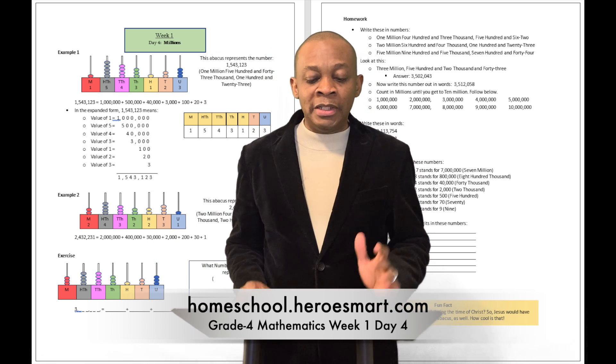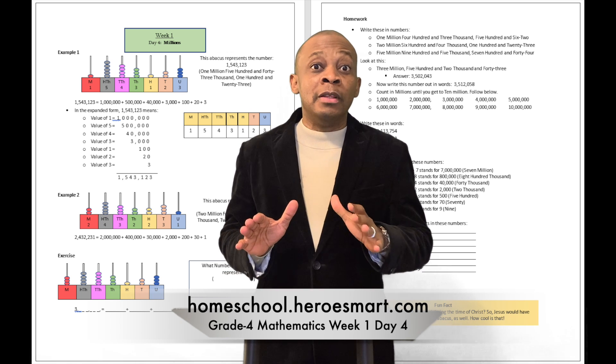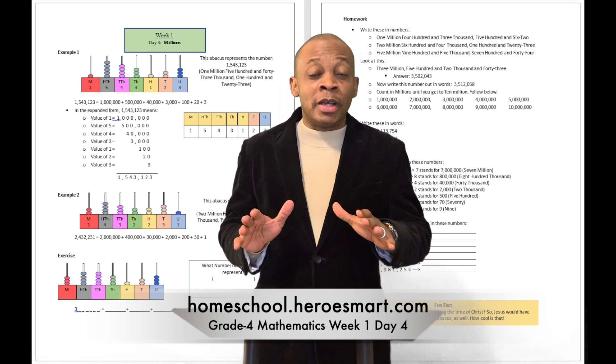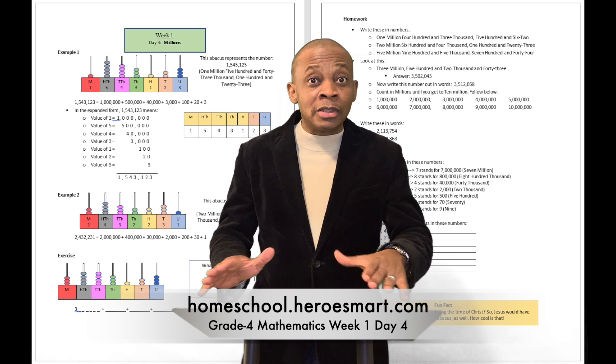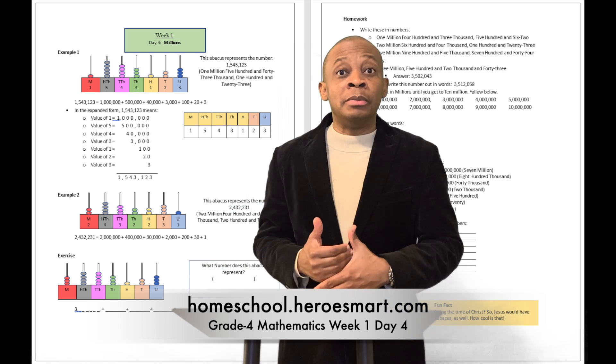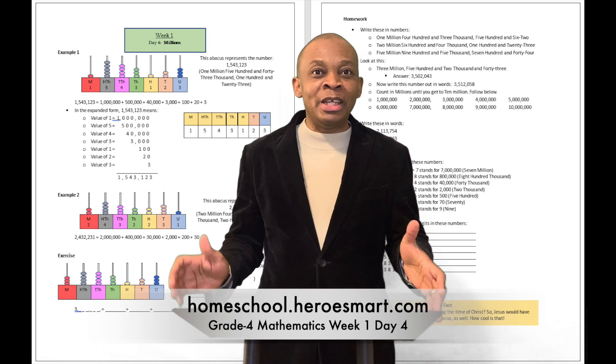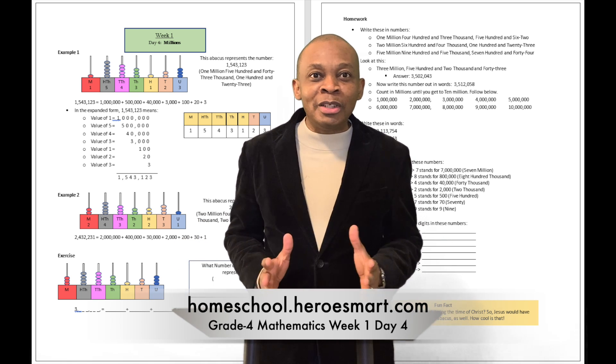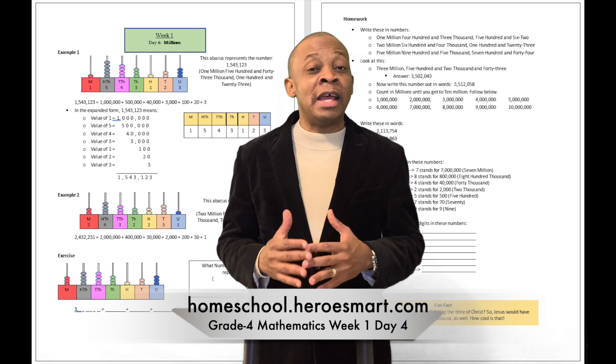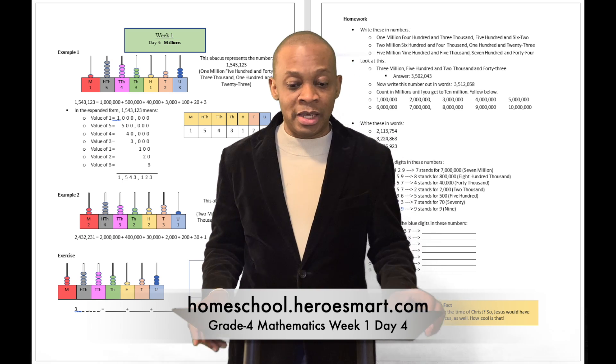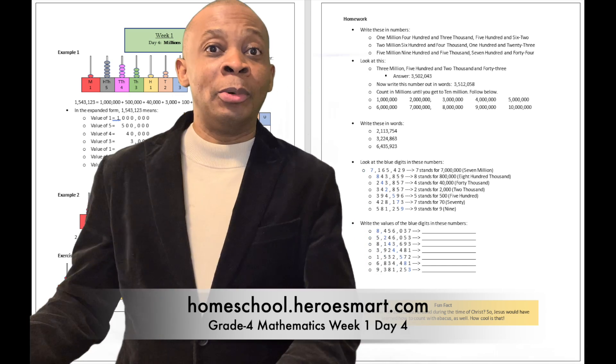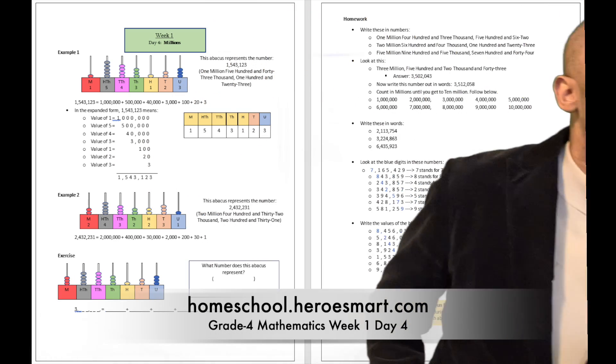Today we're going to be talking about place values for the millions. We're going to be talking about numbers in the millions and we're going to be breaking down those numbers, decomposing those numbers into their place values. Those numbers are going to be in the millions. The millions are numbers that have seven digits to them. So let's try to demonstrate on the board. You are going to see what I'm talking about.